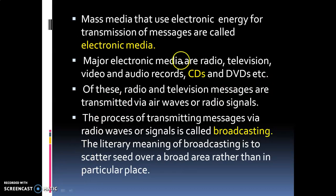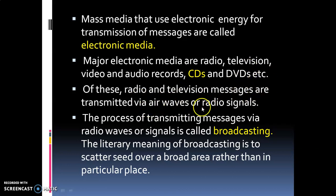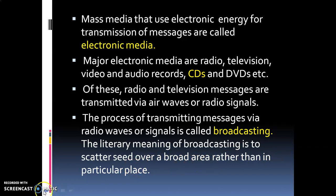Mass media that use electronic energy for transmission of messages are called electronic media. Major electronic media are radio, television, video, audio records, CDs and DVDs, etc. Radio and television messages are transmitted via air waves or radio signals. The process of transmitting messages via radio waves or signals is called broadcasting. The literary meaning of broadcasting is to scatter seed over a broad area rather than a particular place.